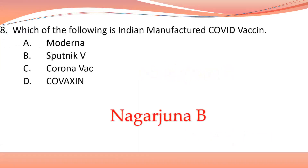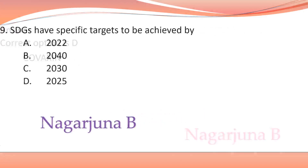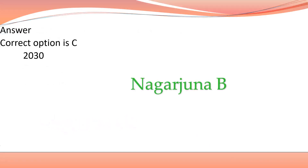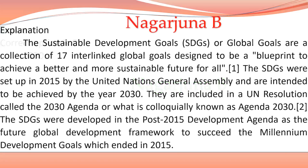The next question's answer is option D, Covaxin. The next question: SDGs have specified targets to be achieved by — the answer for this one is option C. A few pieces of information regarding what an SDG is are also provided.